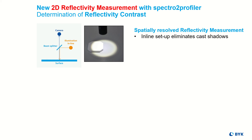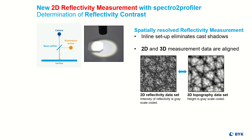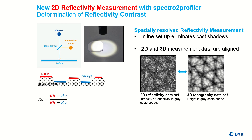Spectro 2 Profiler offers a new camera-based technology to capture the spatial distribution of reflectivity. An inline illumination avoids shadow zones. The perceived depth of a leather-like surface is dependent on the reflection behavior on hills and valleys. Therefore, the 2D reflectivity measurement is aligned with the 3D topography image to separate the reflection of hills and valleys. The difference between the two describes the contrast and perceived depth of a structured surface.